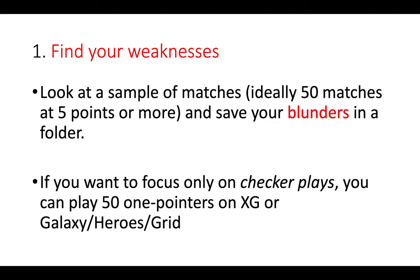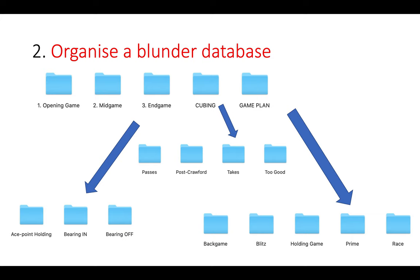Once you've done that first step, the second step is to organise a blunder database on your computer. This is just an example of one which you can adapt for your own needs. You can see at the top I have five main folders: opening, mid and end game, cubing, and game plan. By clicking on those folders, I have subfolders such as different cube decisions, different game plans, and different aspects of the end game. Once I've found my blunders and errors, I can drop those screenshots into the corresponding folders.